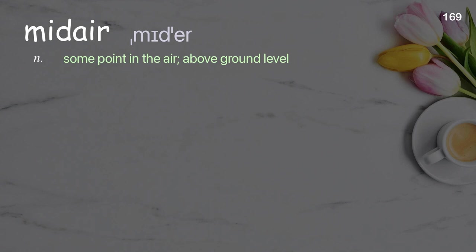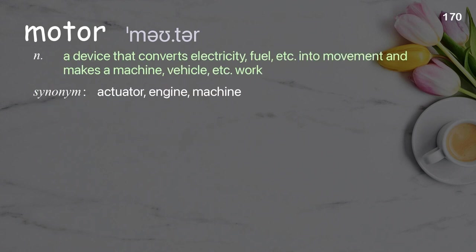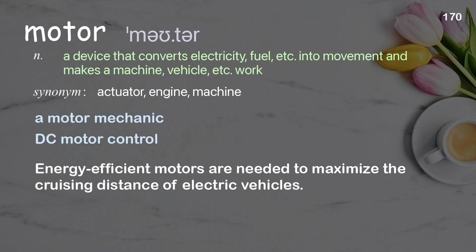Midair: some point in the air, above ground level. Examples: a midair collision, thrown out into midair. She flawlessly performed a midair somersault. Motor: a device that converts electricity, fuel, etc. into movement and makes a machine, vehicle, etc. work. Examples: a motor mechanic, DC motor control. Energy efficient motors are needed to maximize the cruising distance of electric vehicles.